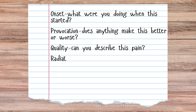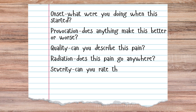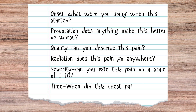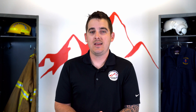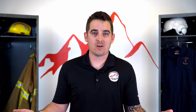For R, radiation: does that pain go anywhere, or can you point to it in one specific spot? For S, severity: can you rate that pain on a scale of one to ten, ten being the worst pain in your life? Because if you give them the option, they're going to tell you everything's the worst pain in their life — they'll give you a 22 instead of an accurate number. And then T for time: when did this chest pain start? Try to get an accurate timeline, and ask has this pain changed over time since it started.